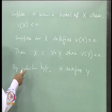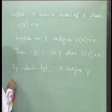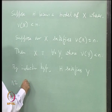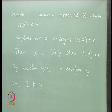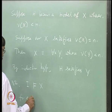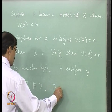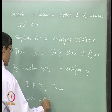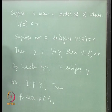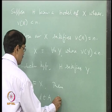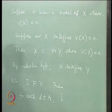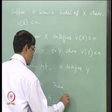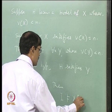Now I is a model of X, so for each element d in A, we have I satisfies X with x substituted by d.